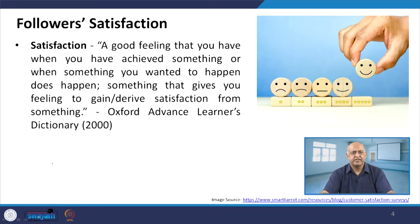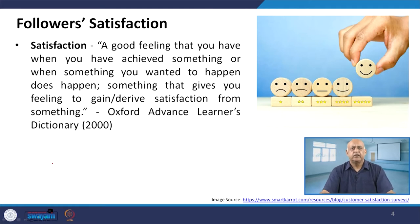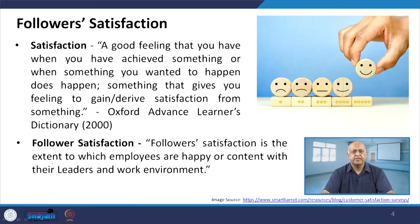Whenever we are talking about follower satisfaction, it is necessary to first understand what satisfaction is. It is a good feeling that we have when we have achieved something, or when something we wanted to happen does happen. Satisfaction is a feeling that arises on any achievement of the individual. Whatever one targets to achieve, and when he is able to achieve that particular target, then he will have that satisfaction — 'I did it.' His wishes have the occurrence of those happenings, and as a result, the person is deriving satisfaction from what he gains.